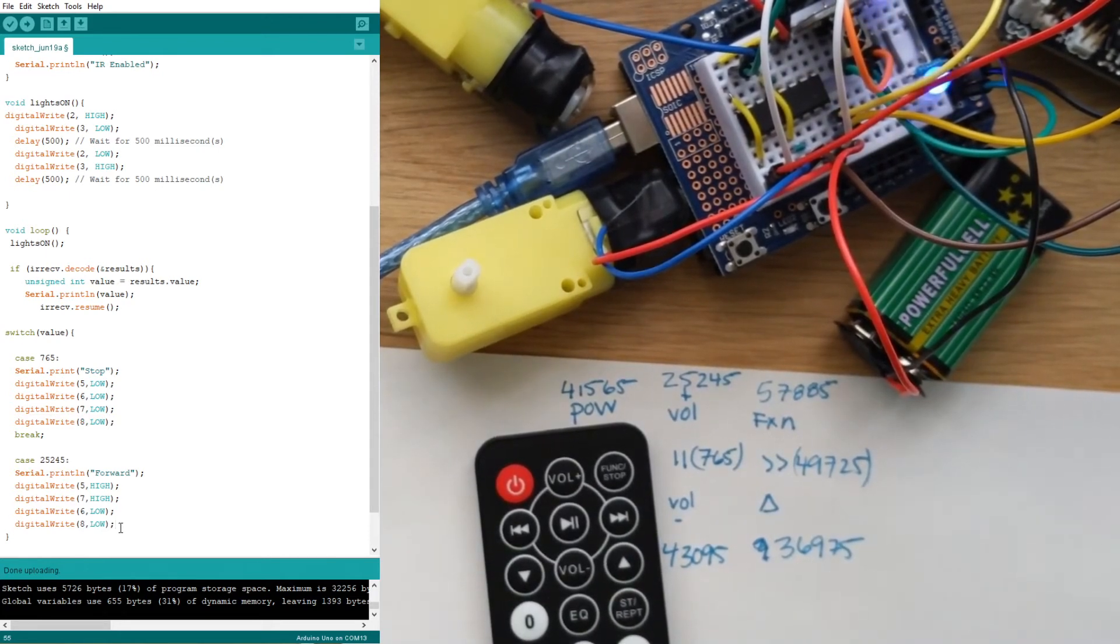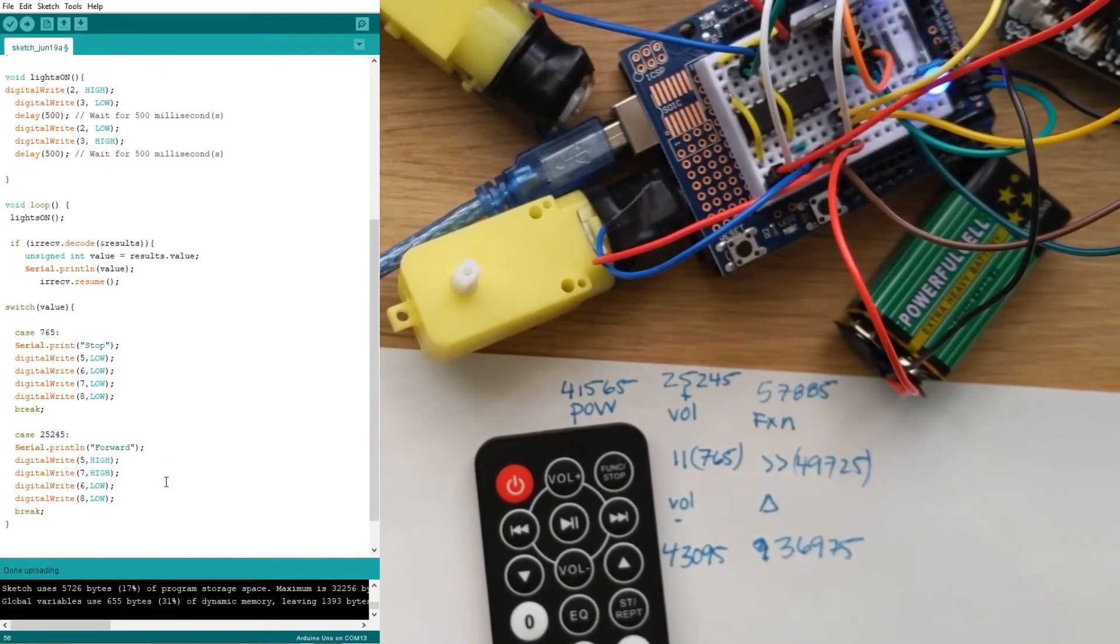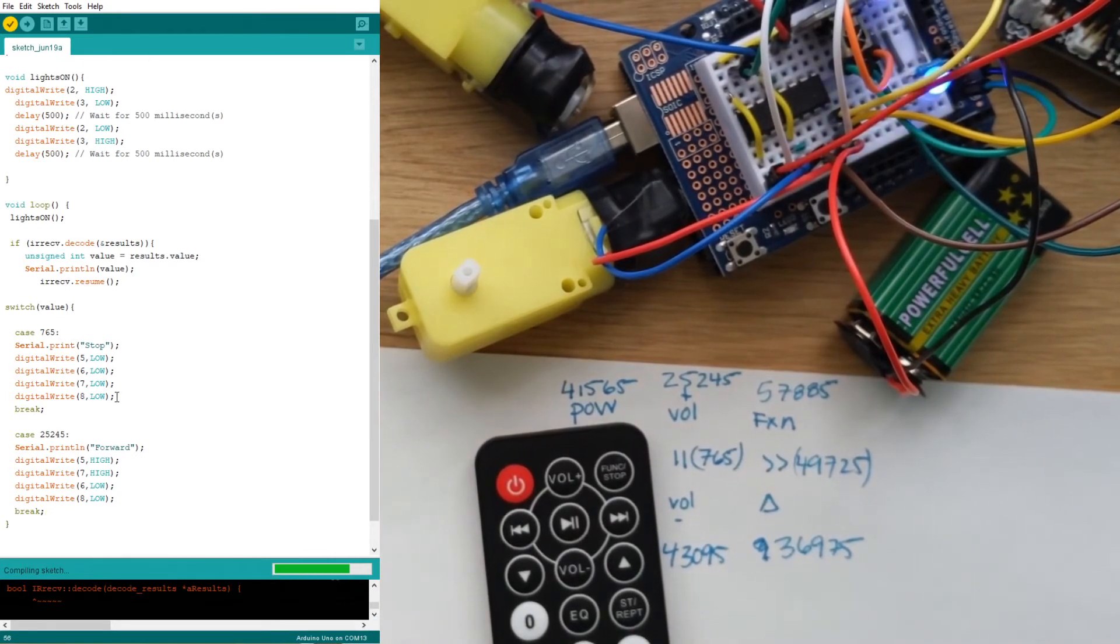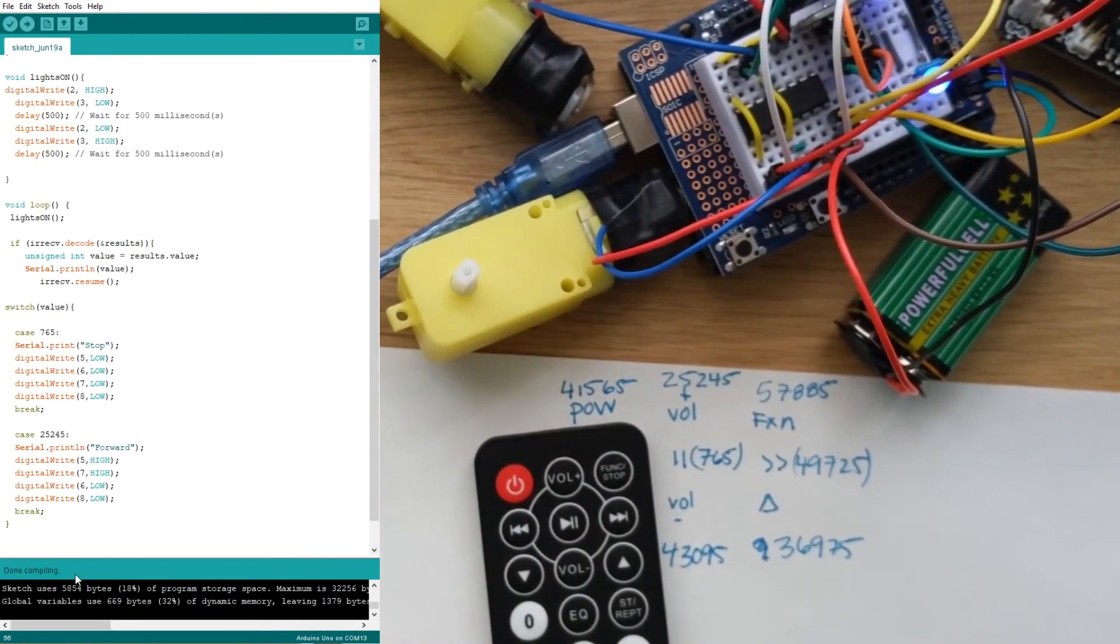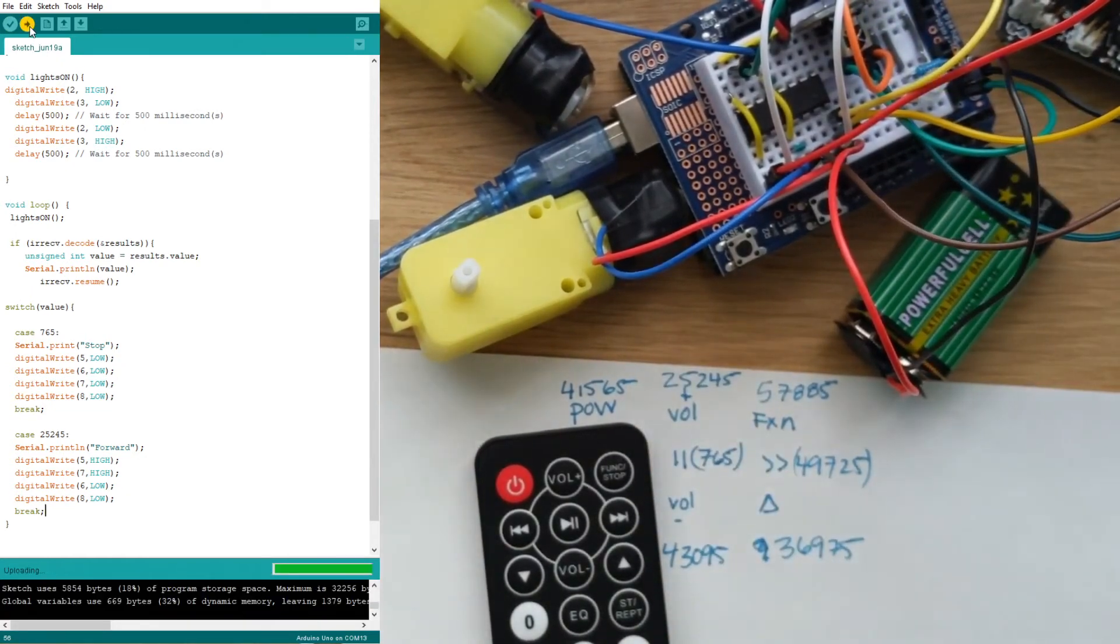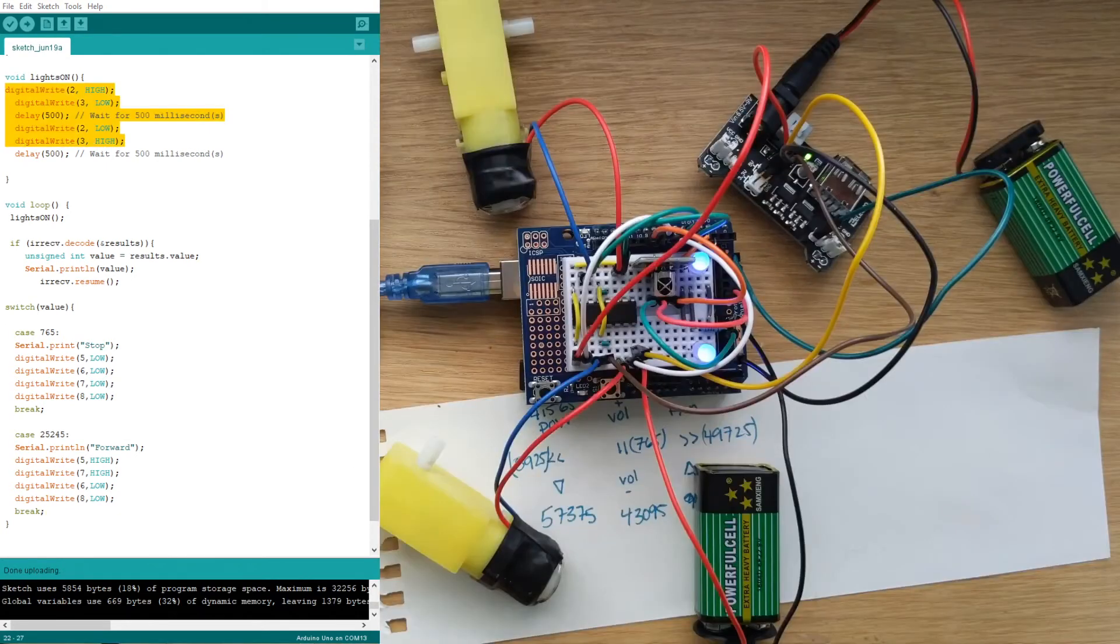Since that's all I want to do with that case for now we could write the break just like that. Then we can verify our code, make sure we have all of our squiggly brackets, and yep it's very happy. We can plop this on over onto our Arduino.